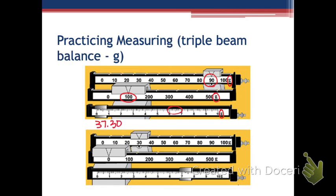For the last triple beam balance example, students gave answers of 37.30. Does this one fall exactly on the 0.3 mark? It's hard to tell in the image, but if it does, we need to make sure we have that zero — 37.30. The three is what it's read to, so we do want two decimal places. Make sure you include that trailing zero.